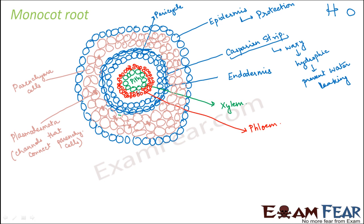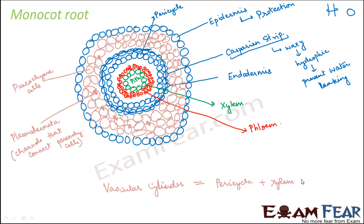Whenever you get a root sample, you take a cross-section and observe it under a microscope. By looking at the structure, you can determine whether it is a monocot root or a dicot root. A few important terms: a vascular bundle is xylem plus phloem, while the vascular cylinder is pericycle plus xylem plus phloem plus pith.